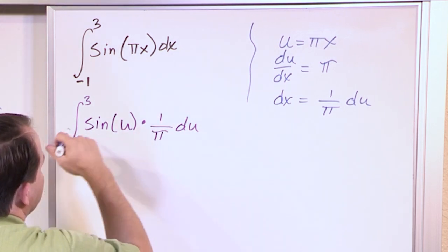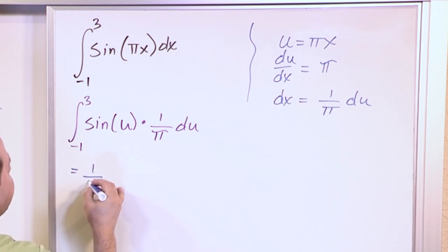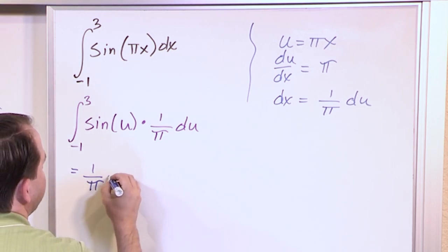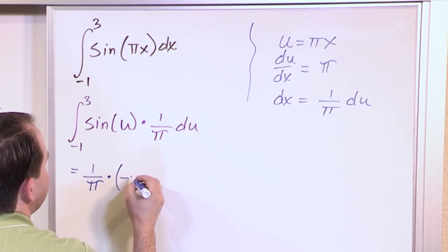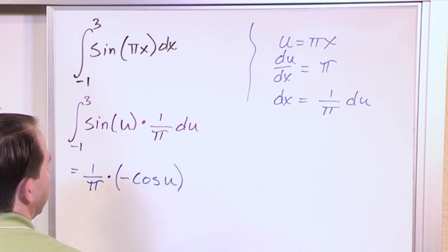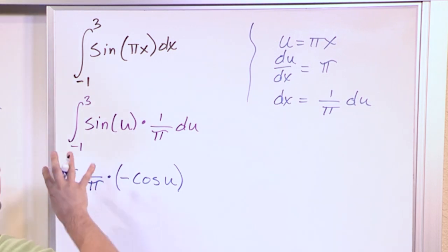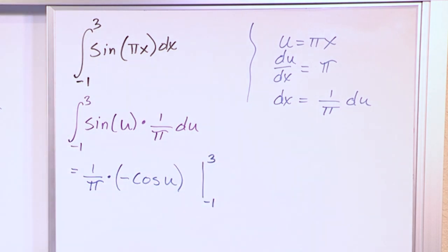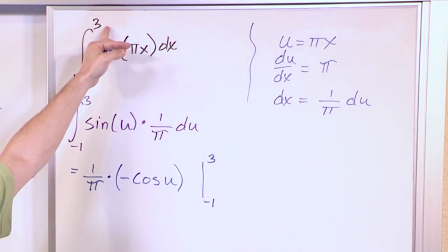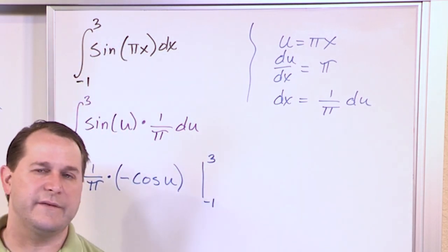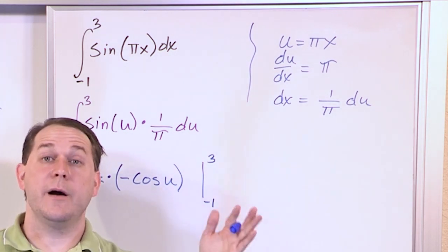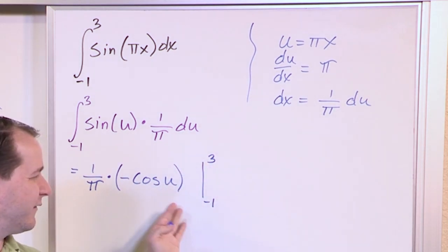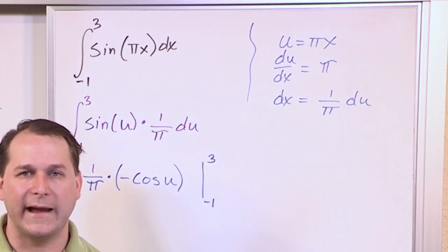The 1 over pi comes out of the integral. The integral of sine is negative cosine. But we can't substitute the limits yet — those limits (x = -1 to x = 3) correspond to x-values, and our answer is still in terms of u. You'll get the wrong answer if you substitute the limits right now.